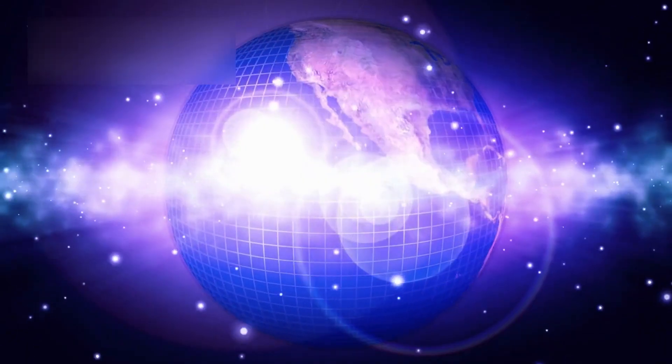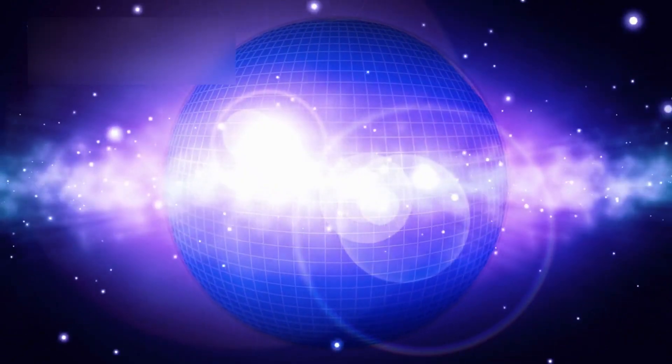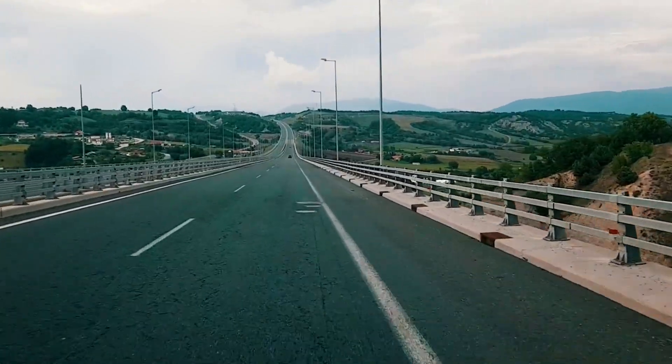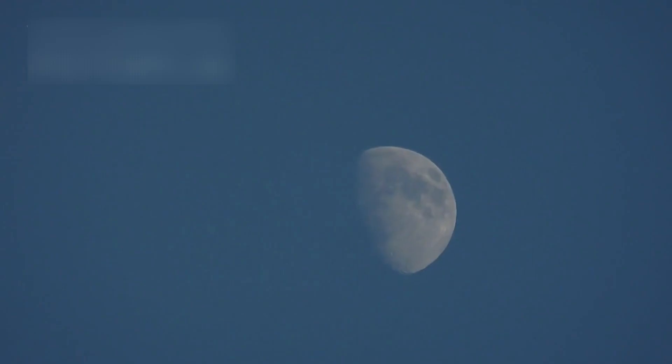To grasp the scale, we begin with distance. Driving around Earth at highway speed would take 2 weeks. At that pace, reaching the moon would take 5 months.